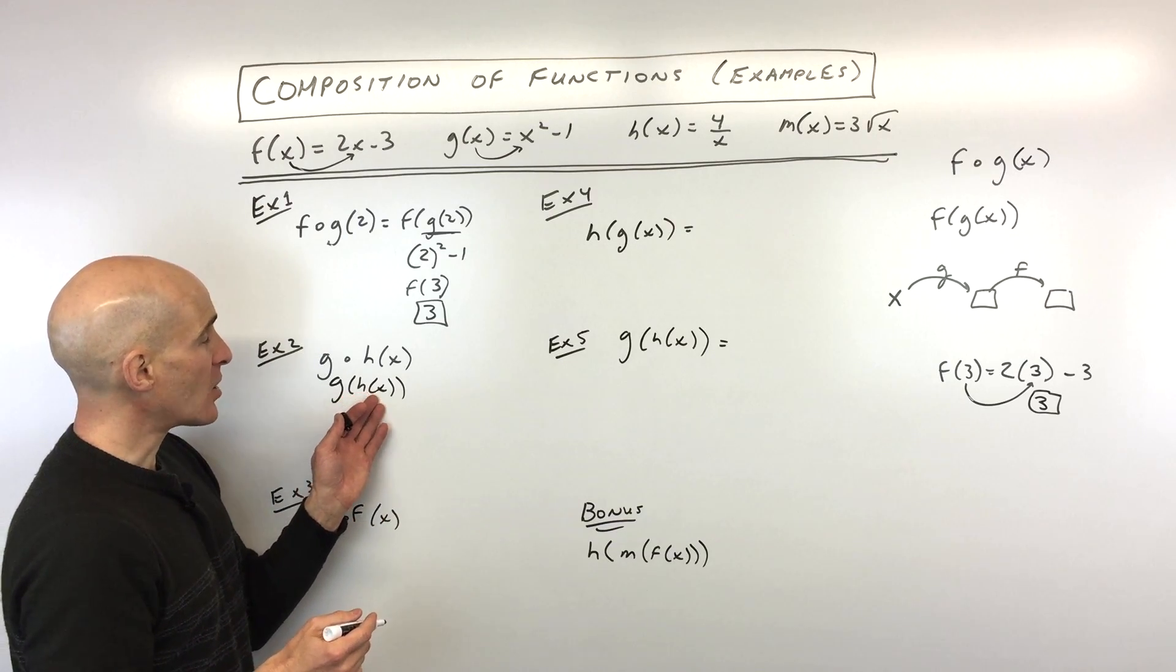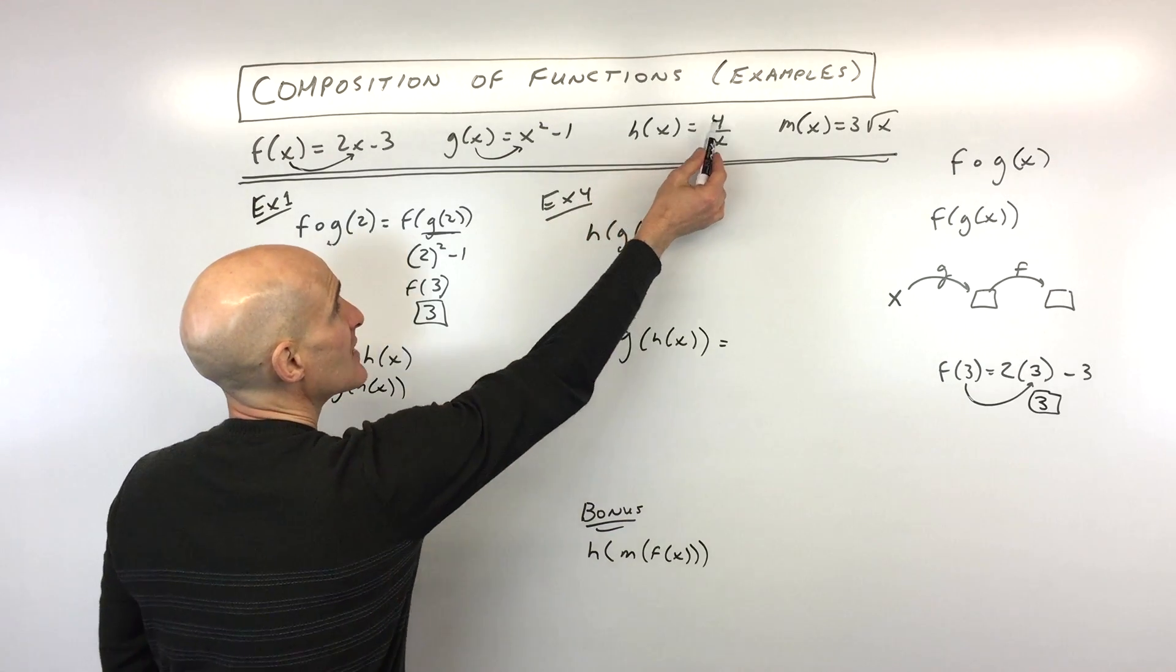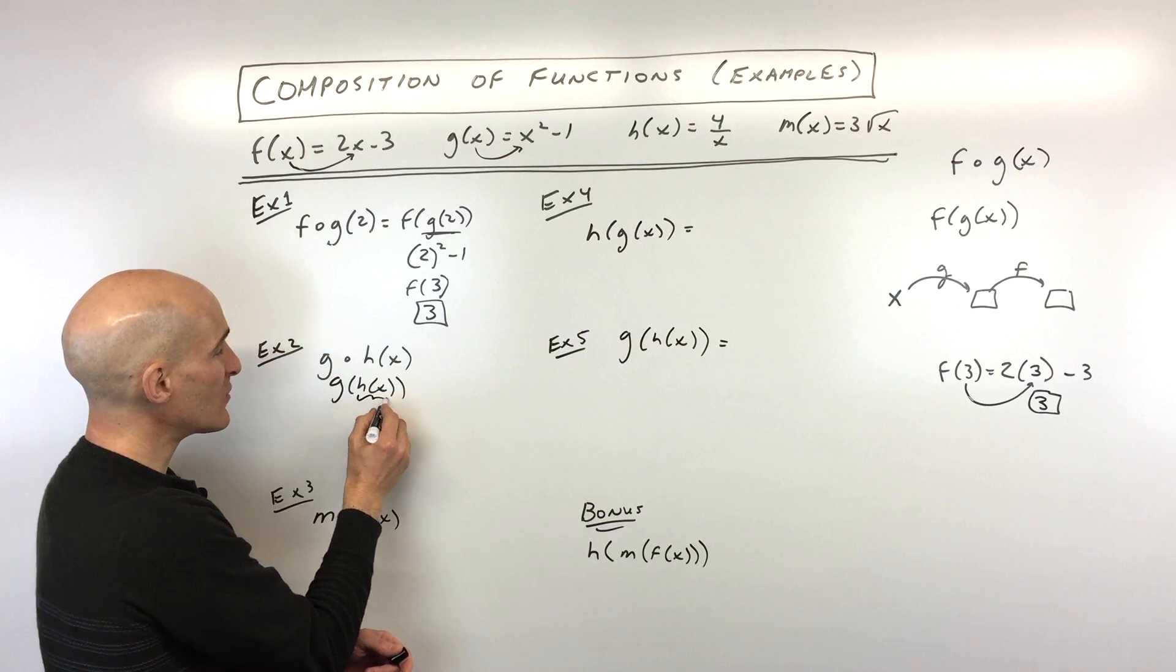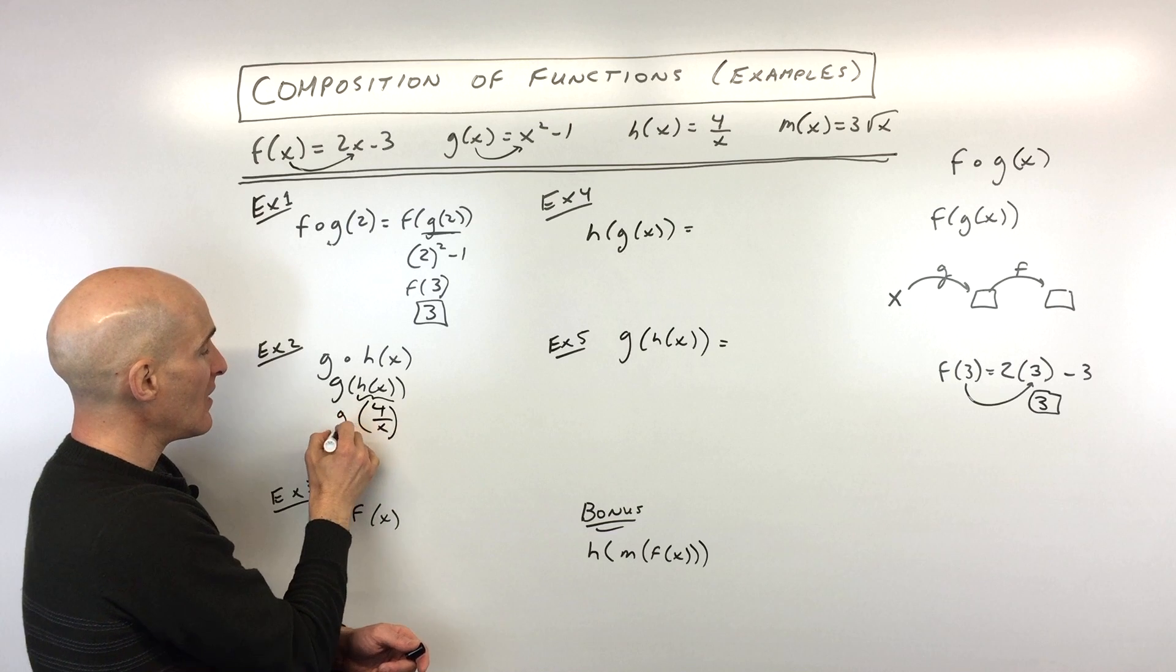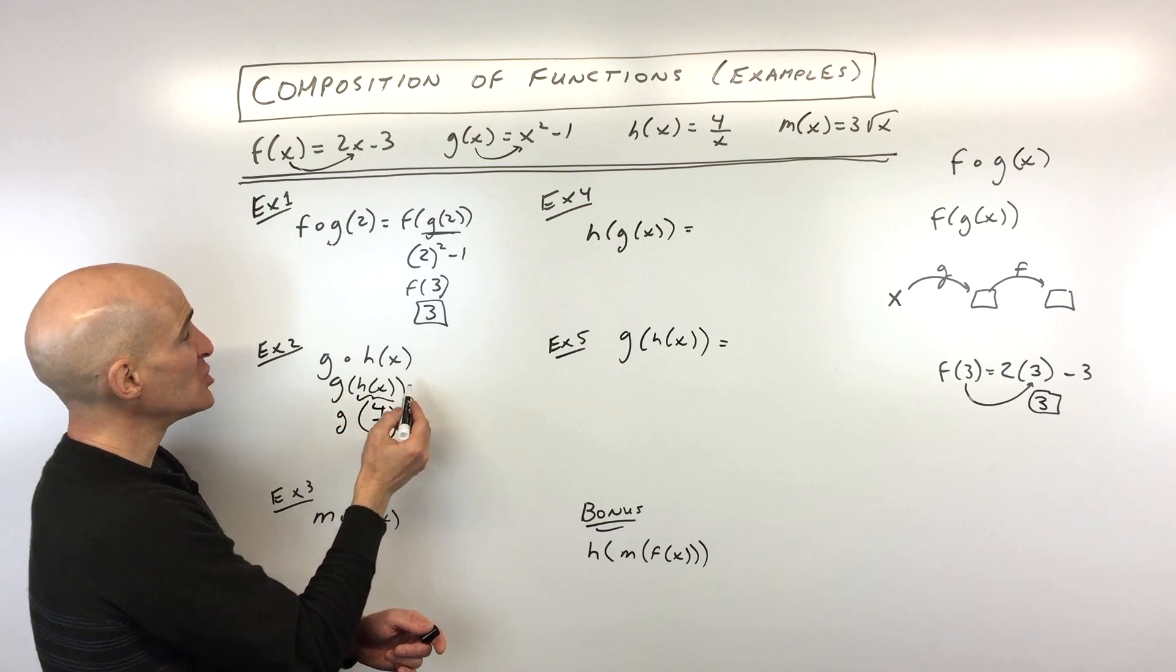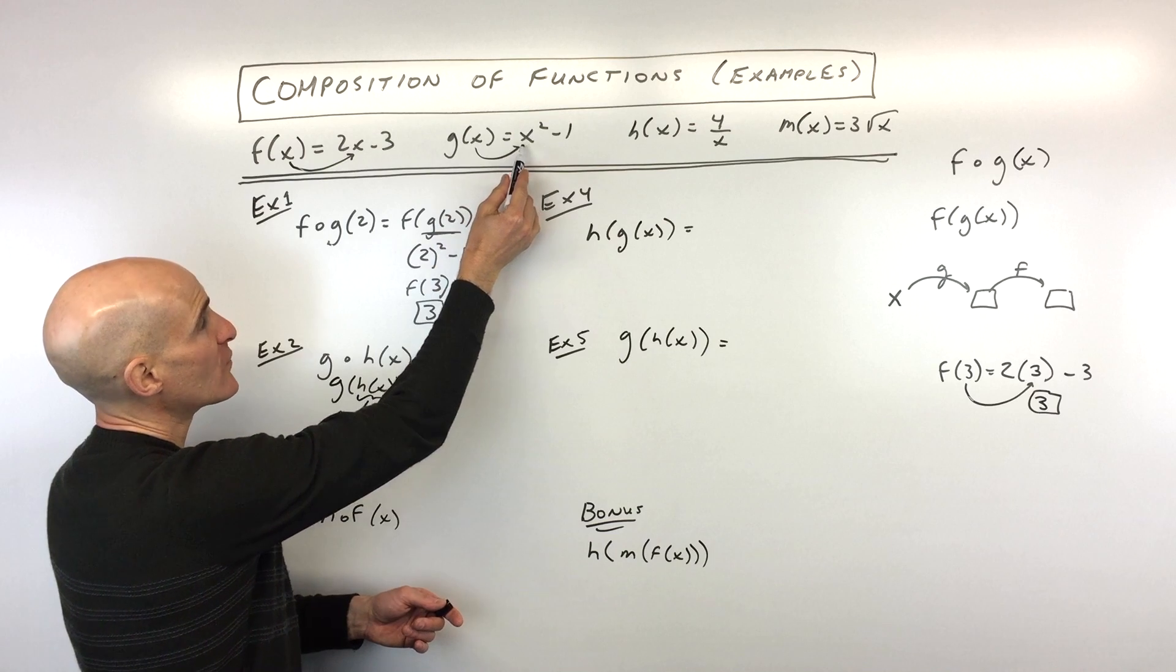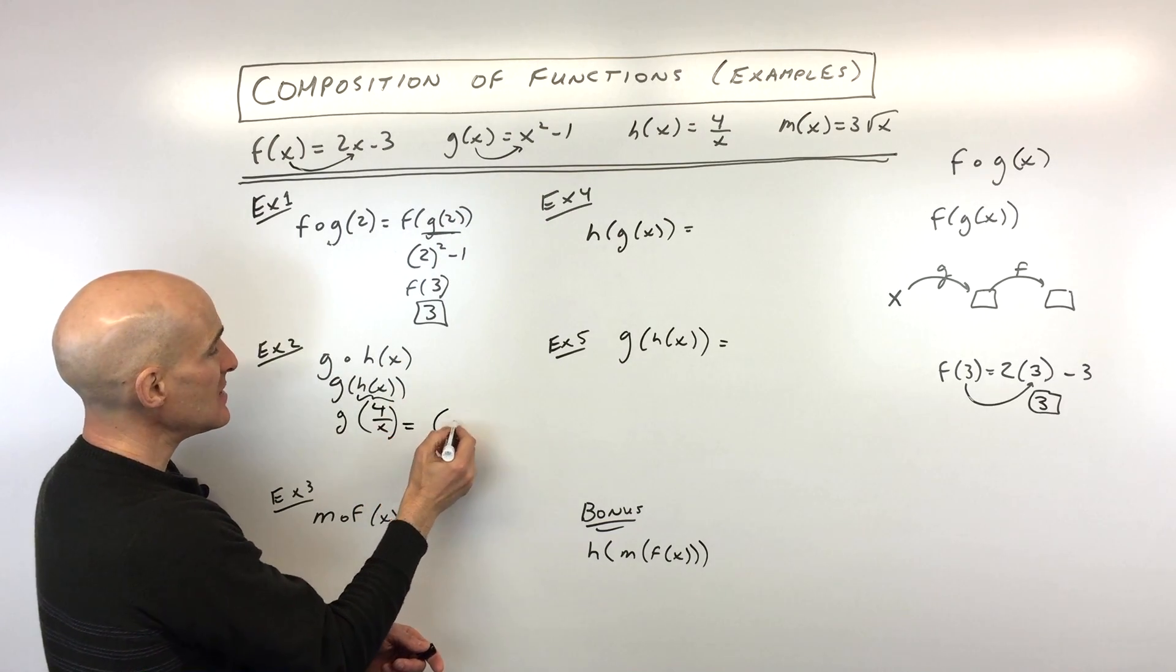What we're going to do here is start on the inside, h of x equals 4 over x. So I'm going to replace h of x with what it equals, that's 4 over x. Now we're going to go over to our g function. And remember whatever's in parentheses, that goes in for x on the right.